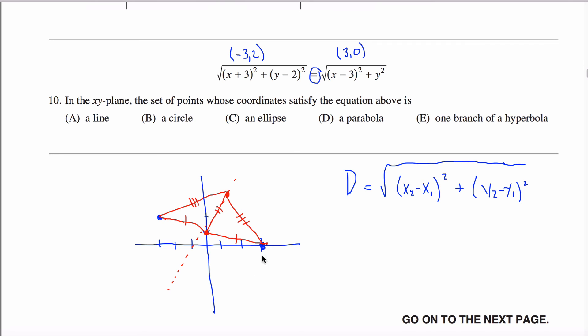So this distance is the same as this distance. The point that I'm making is that this point right here will be in your solution set as well, as will any point on this line, any point.